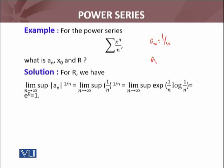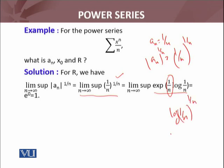Since a_n is 1/n, |a_n|^(1/n) becomes (1/n)^(1/n). Now we need to calculate its limit superior. This is a trick we've used before: I will write (1/n)^(1/n) in exponential and log form. Using the log property, (1/n)^(1/n) = exp((1/n)log(1/n)). Since e and log are anti-functions, they are inverse functions of each other.